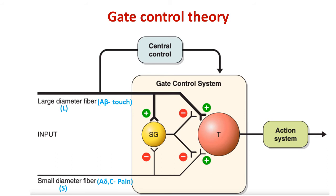If the large diameter fibers or L fibers are stimulated at the same time around the wounded area, the large diameter fiber stimulates the SG neuron. The SG neuron then inhibits both the pain and touch pathways — both large and small diameter fibers — before the T cell, which is the pain afferent. The pain pathway and the touch pathway are both inhibited, so pain cannot travel further to the central nervous system. The gate is said to be closed, resulting in analgesia.